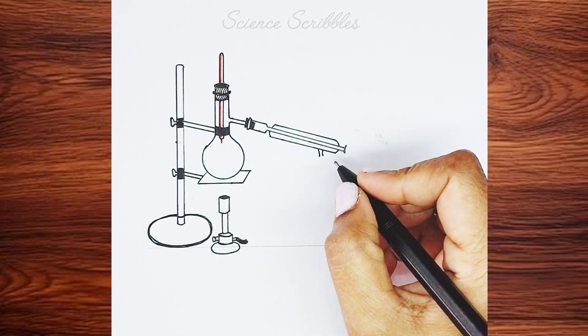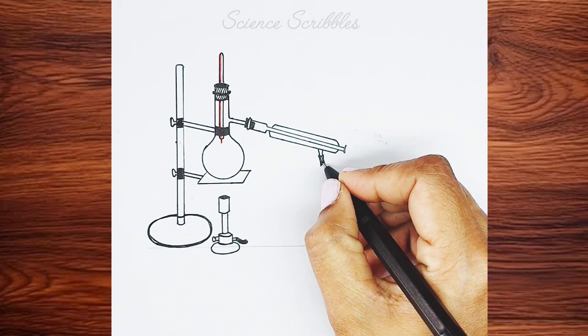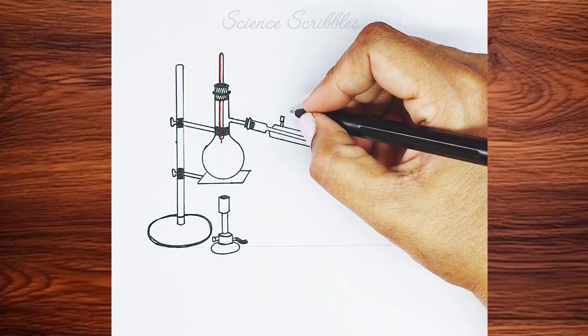Next to the condenser, there are two pipes attached, one for the cold water inlet and the other for the cold water outlet. So, we'll draw small tubes on both the right and left sides.